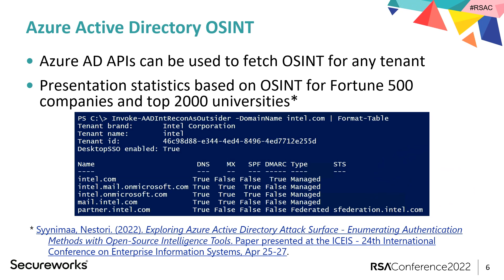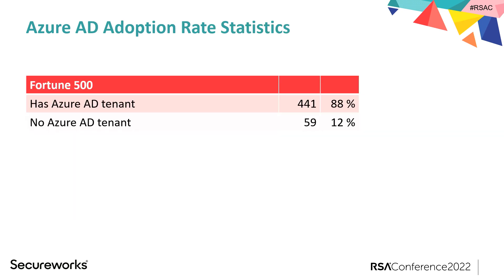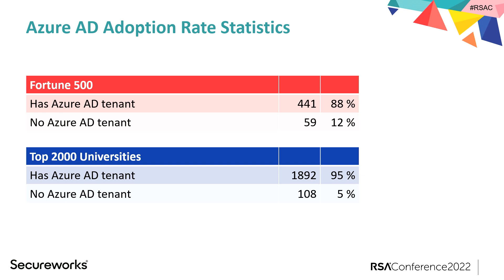How many Fortune 500 organizations are using Azure AD? About 88%. And from the top 2,000 universities, 95%. So it's safe to say that everybody is using Azure AD.